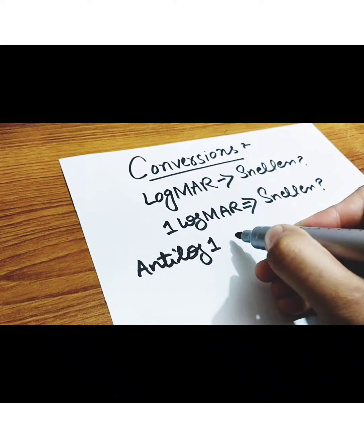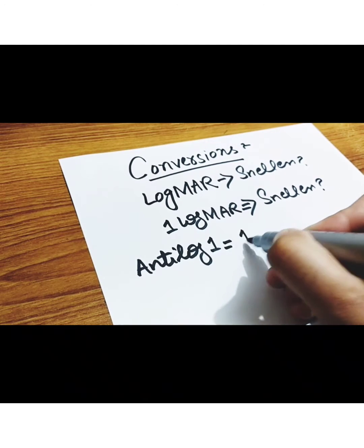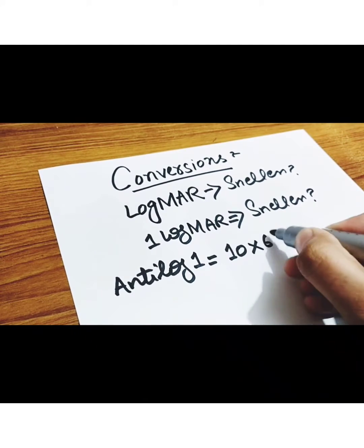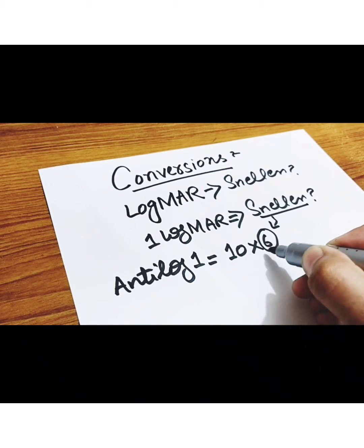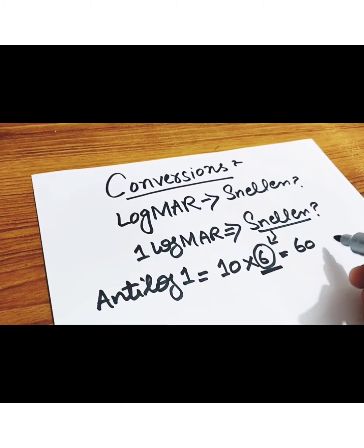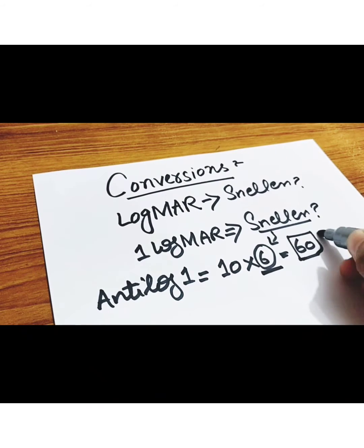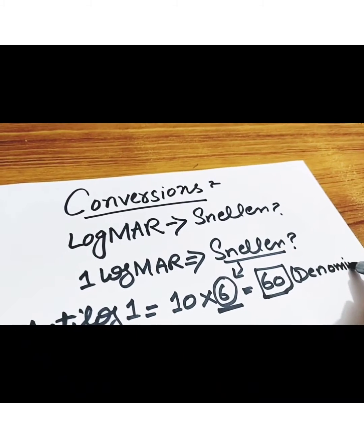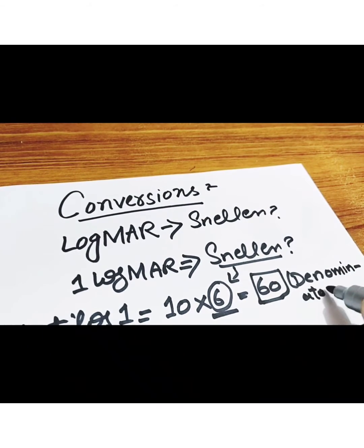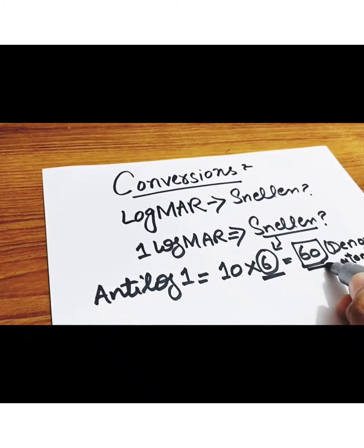For this, first of all we will take antilog of 1 LogMAR, that will be 10, and we will multiply it with 6, that is 6 meters of Snellen, and it will become 60. This 60 will be written in the denominator of the reading.